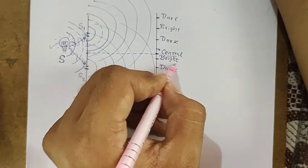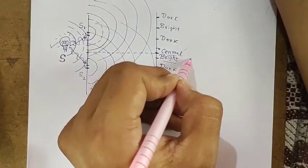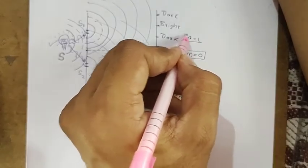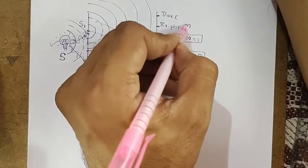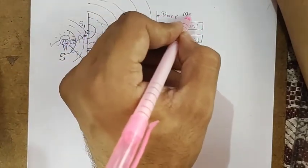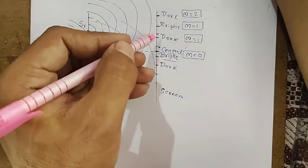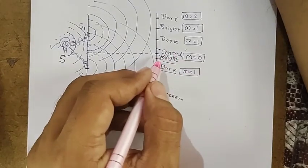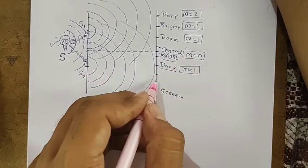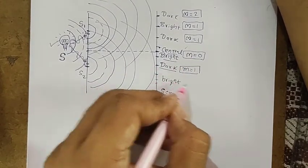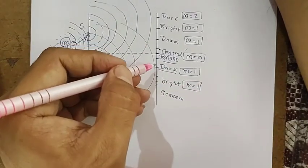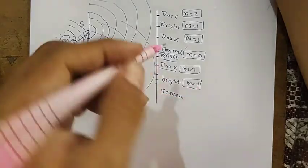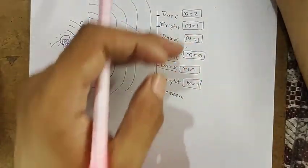These bright and dark points are also given numbers. The central bright is called zeroth bright, with M equal to zero. The first dark has M equal to one, and the first bright after the central bright is also M equal to one. Second dark has M equal to two, and so on. Zeroth dark never exists; only zeroth bright exists. On one side of the central bright, bright and dark points are taken as minus one, minus two, and on the upper side as plus one, plus two.